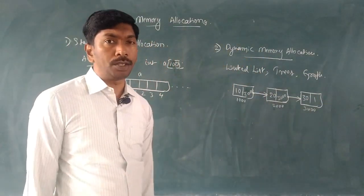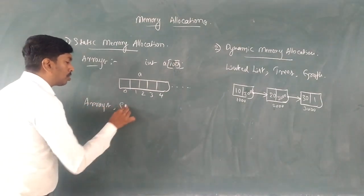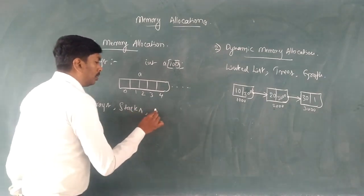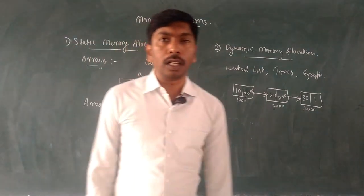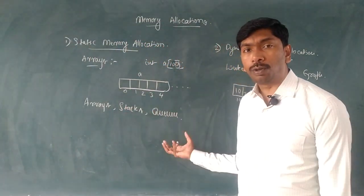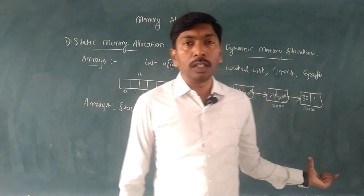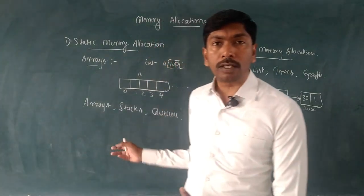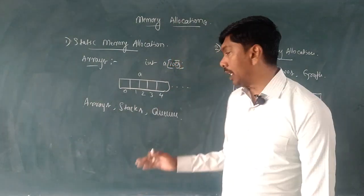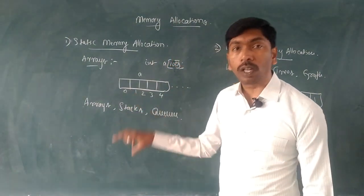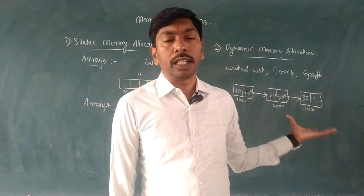Dynamic memory allocation is used for linked lists, trees, and graphs. Static memory allocation is used with arrays, stacks, and queues. Stacks and queues can be implemented using arrays with static memory allocation, or using linked lists with dynamic memory allocation. This is the overview of static and dynamic memory allocation.